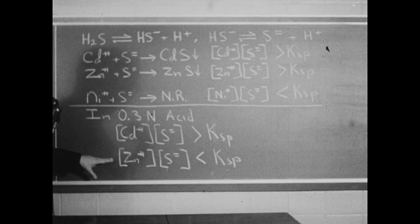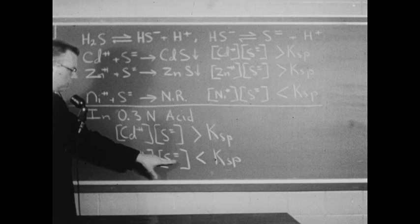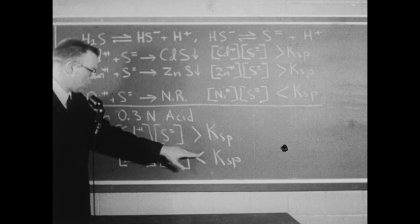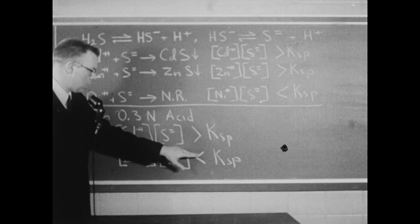With zinc ion, however, no precipitate occurred under these conditions. The reduced sulfide ion concentration — made small by the presence of the acid — was so small that its concentration times the zinc ion concentration was now less than the solubility product constant for zinc sulfide.